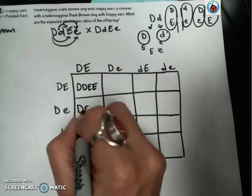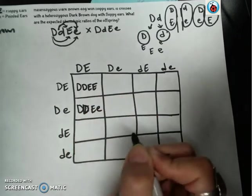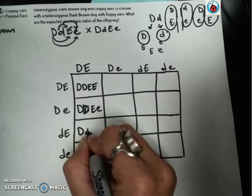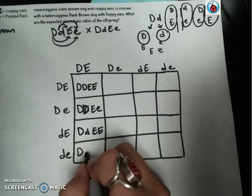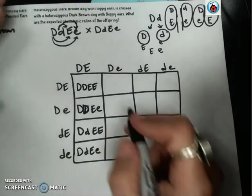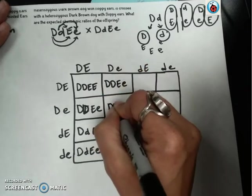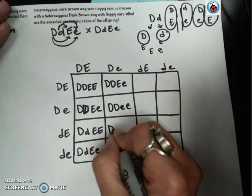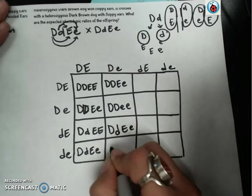Now, as you fill in these, like I already made a mistake right there, as you fill in these dihybrid crosses, because there's so many 16 boxes, there's lots of room for errors. You want to be careful as you fill them in and make sure that you don't make any mistakes. So go ahead and take some time. Fill in your dihybrid cross.